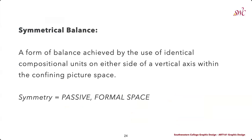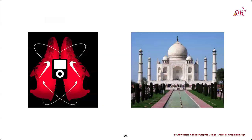Symmetrical balance is achieved through the use of identical compositional units on either side of some sort of axis, and this typically creates a more passive, more formal space in the design. You might think about things like wedding invitations or a graduation flyer — these often use symmetrical balance to showcase a more passive and formal space. We can see a Nike ad using this symmetrical design to create dynamic lines with a contrast of colors and movement, putting emphasis in the center using negative space to showcase the product. The Taj Mahal is a perfectly symmetrical building that still creates a formal, passive, symmetrical sense of balance.